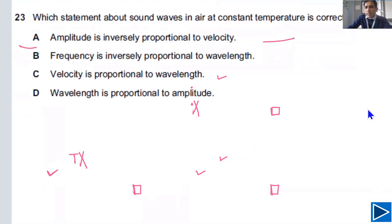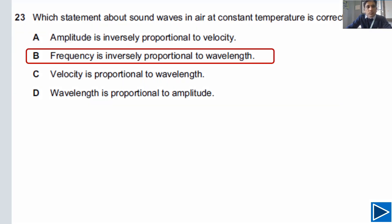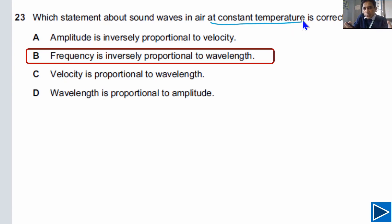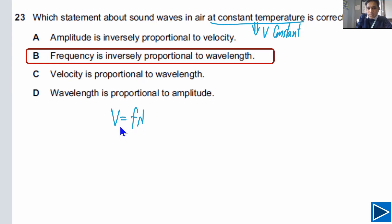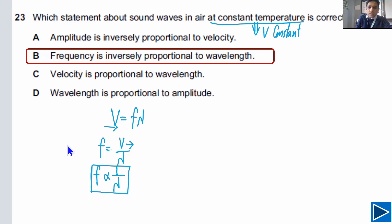The answer for the next question is B. First thing to understand: constant temperature means speed is constant, because if temperature changes, the speed of sound waves changes. Since V is constant, we can write V = f × λ, which gives f = V / λ. Since V is constant, frequency f is inversely proportional to wavelength λ. That is the key point and the answer is B.